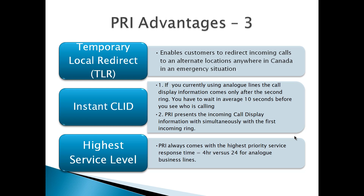One of the most important things is the highest service level. With any provider, any carrier in North America, PRI always comes with the highest priority service response time, which here in the GTA is four hours. So you get a guaranteed repair within four hours, versus the 24 hours you usually get for regular analog business lines.